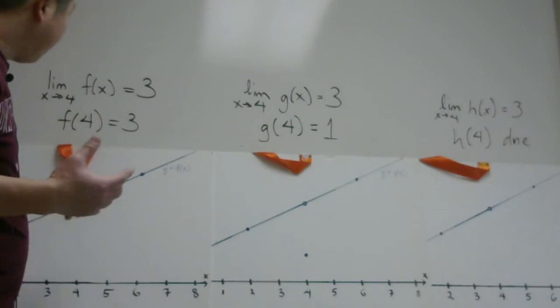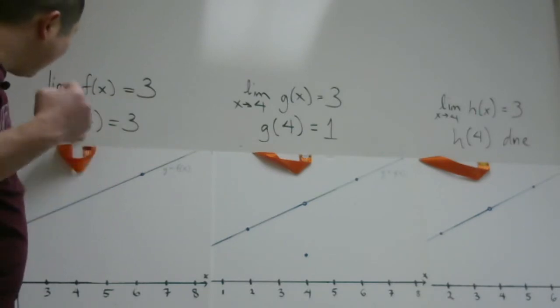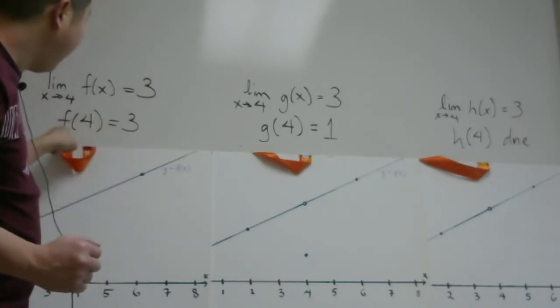The actual y-value, the algebra question, when x is exactly equal to 4, the y-value is 3. So we write f of 4 equals 3.